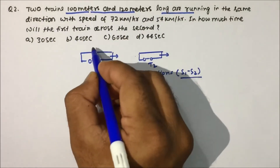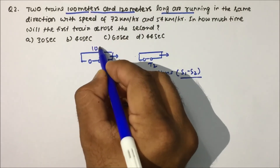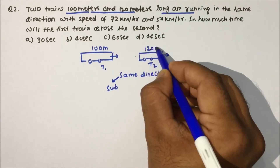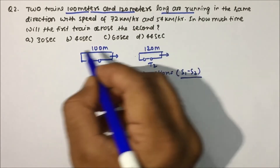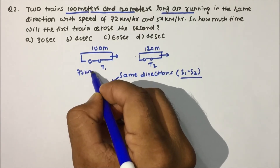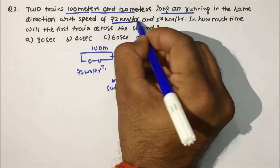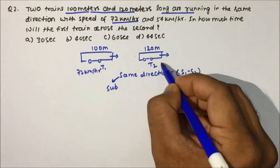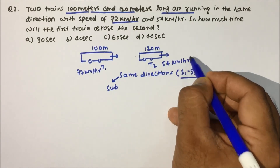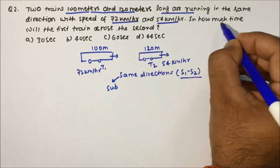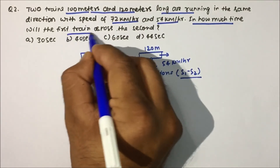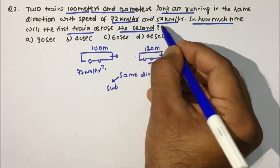The two trains are 100 meters and 120 meters long respectively. The first train's speed is 72 kilometers per hour and the second train's speed is 54 kilometers per hour, as given in the question. We need to find how much time it takes for the first train to cross the second train.